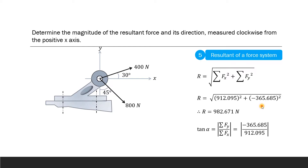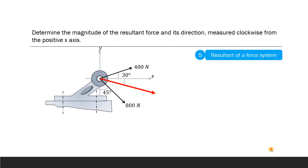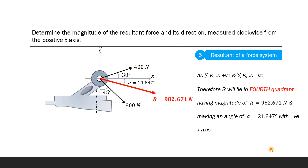The direction of the resultant is given by tan(α) equals the magnitude of summation of Fy divided by summation of Fx, taking positive values only: 365.685 divided by 912.095. So alpha equals tan inverse of that value, which comes out to be 21.847 degrees. Since summation of Fx is positive and summation of Fy is negative, the resultant lies in the fourth quadrant. Therefore R is 982.671 Newtons at 21.847 degrees to the positive x-axis. This is how we find the resultant of a coplanar concurrent force system.